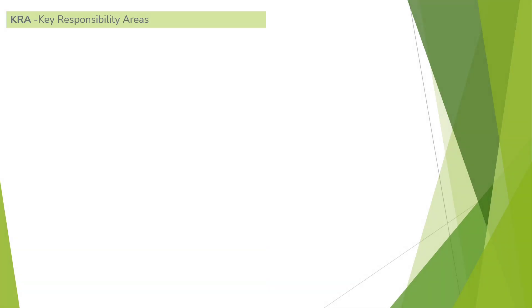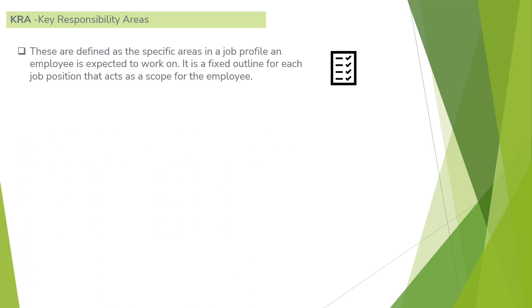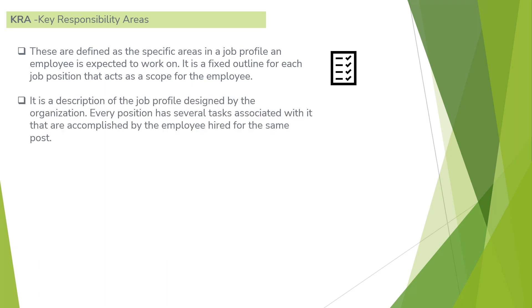Now let's start with KRA, which stands for Key Responsibility Area. These are defined as the specific areas in a job profile that an employee is expected to work on. It is a fixed outline for each job position that acts as a scope for the employee — a description of a job profile designed by the organization. Every position has several tasks associated with it that are accomplished by the employee hired for that post.